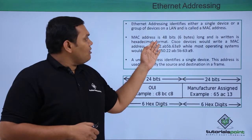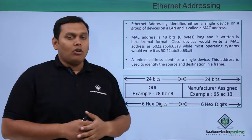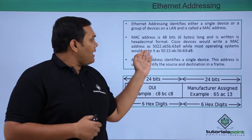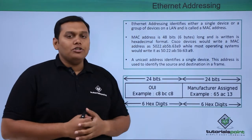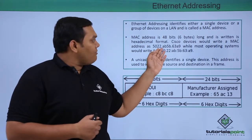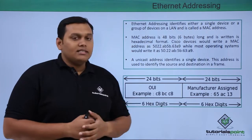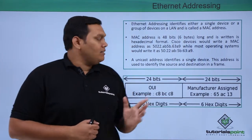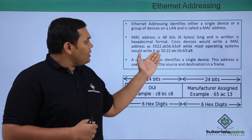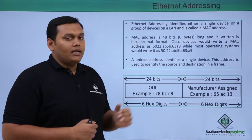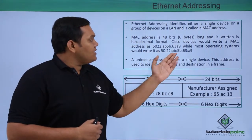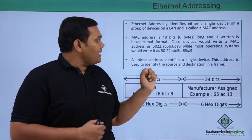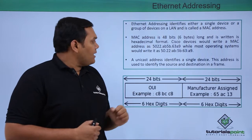MAC address is 48 bits or 6 bytes long. Cisco devices write the MAC address in this format: 5022.AB5B.63A9, and most operating systems write it in this format: 50:22:AB:5B:63:A9. So this is the Cisco devices format and this is the operating systems format.